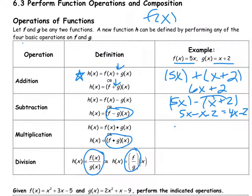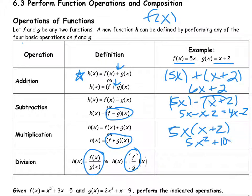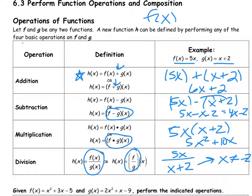For multiplication it would just be 5x times (x plus 2). I can simplify that by distributing. And then for division I would have f over g. But remember, we can't have a 0 in the denominator, so x cannot equal negative 2 because that would make the denominator equal to 0.